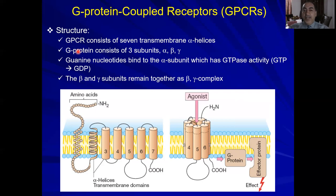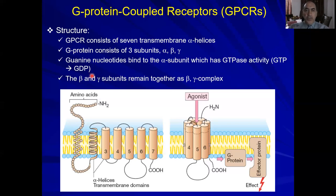The G-protein is called the molecular switch. Just like an electric switch in your room that turns on and off, the G-protein is on when bound to GTP (guanosine triphosphate) and off when bound to GDP (guanosine diphosphate). So: GTP = on (active), GDP = off (inactive). When an agonist binds the receptor, the receptor activates the G-protein — GTP replaces GDP — which then activates certain effector proteins.